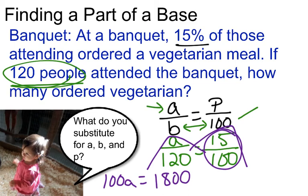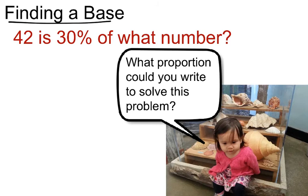So 100 times what number is 1800? Well, if I divide, I would get 18 people. So 18 people ordered a vegetarian meal at this banquet. So in this case, we found part of a base, and it's a good idea to write that in your notes. Now, let's look at when we have to find a base.